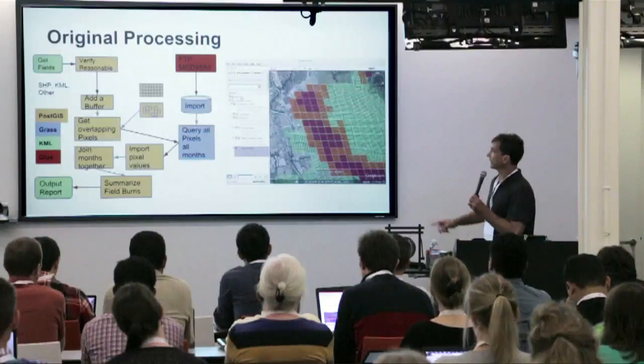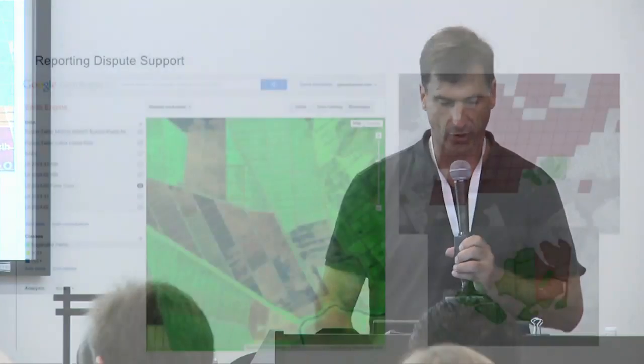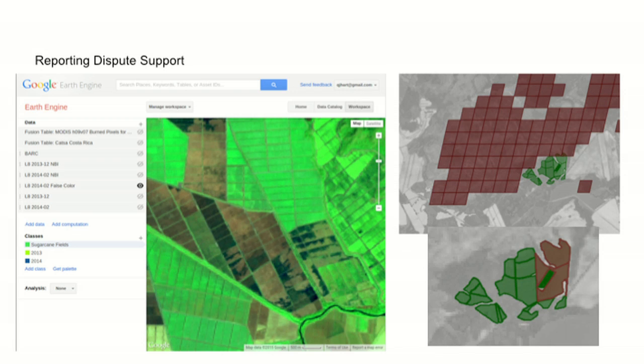Occasionally they would come back and dispute that. It was hard for us to look — you can see that an individual sugarcane field is about on the order of a single pixel — so when MODIS would come in, it would be hard to resolve these disputes just by looking at the MODIS imagery and saying that pixel's red. So what we did is use Earth Engine for this dispute support. It was very simple — we didn't even use the playground, we could do this all in the workspace. We knew when the MODIS pixel said it would be burned, so we'd pull up some Landsat imagery in the workspace, find an image beforehand and an image afterwards that was cloud-free, and calculate the difference to come up with an index, creating reports that showed that.